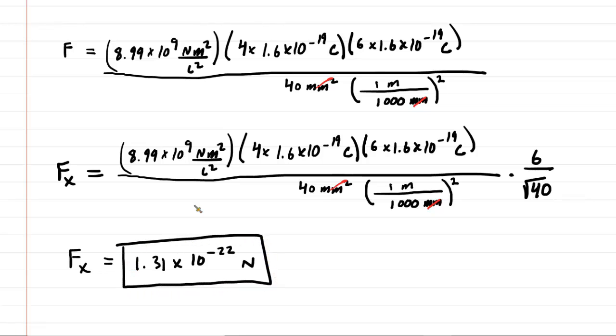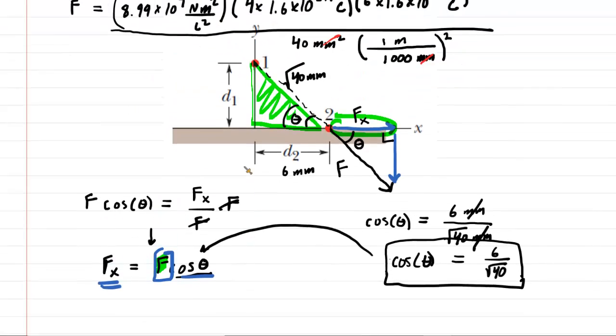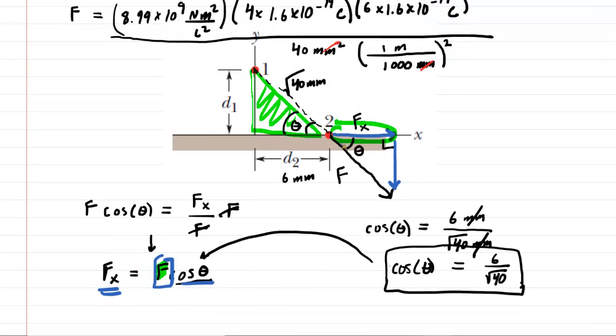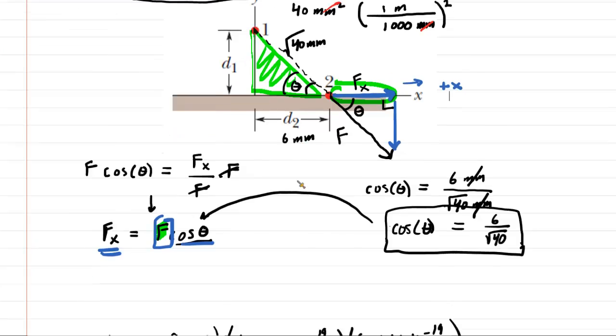Notice it is a positive because if you go back up and look at the diagram, the x component right there of that electrostatic force is pointing to the right, which is classically the positive x direction. So your component should indeed be positive.